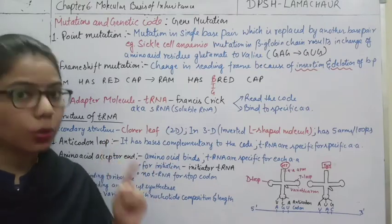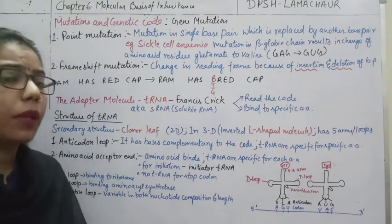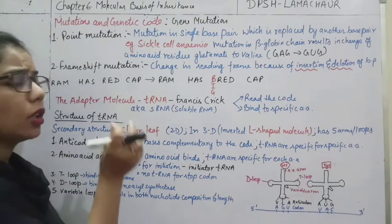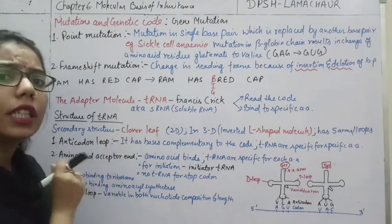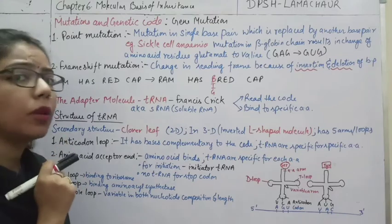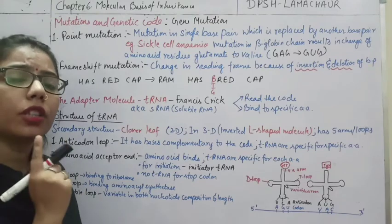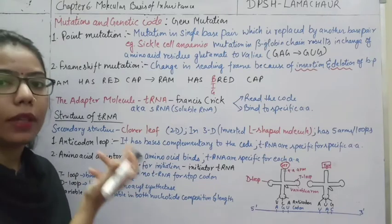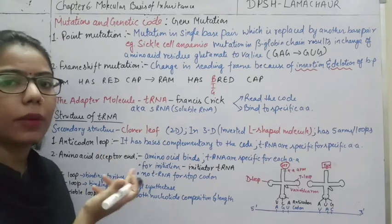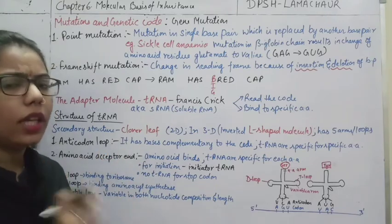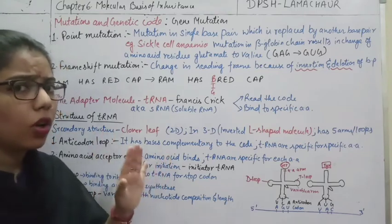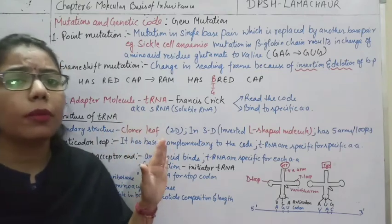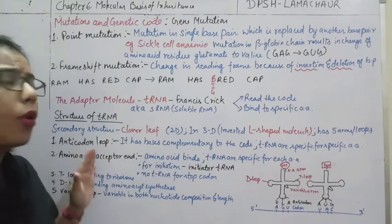Point mutations are those mutations which take place at the gene level. Chromosomal mutations occur in the chromosome by addition, duplication, or deletion. Here we are dealing with point mutation, not chromosomal mutation. Point mutation is when there is a change in any of the base pairs in the nucleotides of the mRNA — that is, a change at a single point.